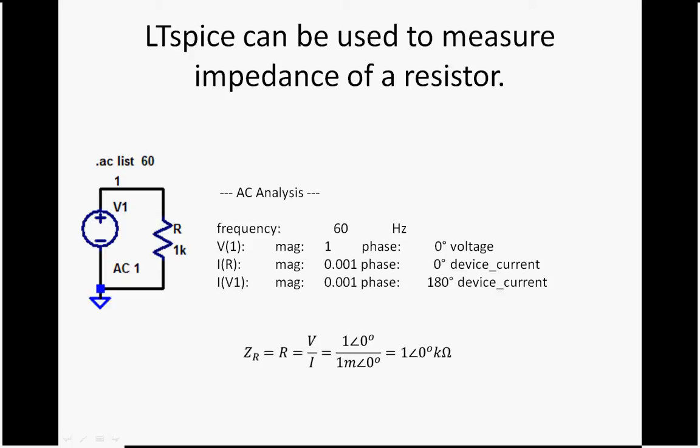The impedance of the resistor equals R equals V divided by I. And it's 1 with a phase of zero divided by 1 milliamp with a phase of zero equals 1 kiloohm with a phase of zero.